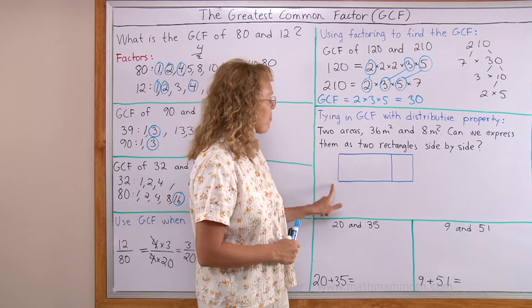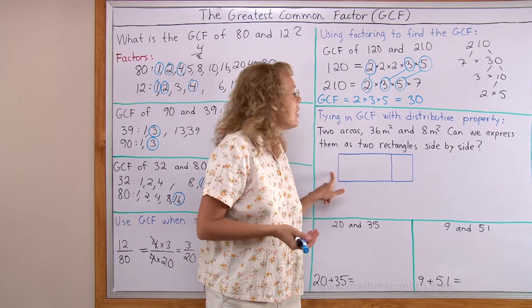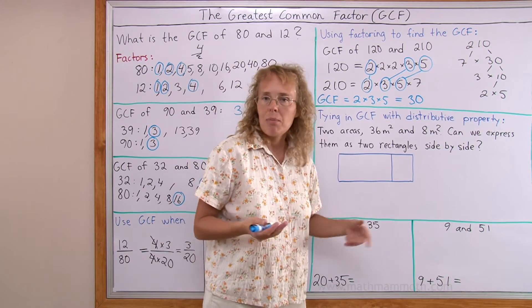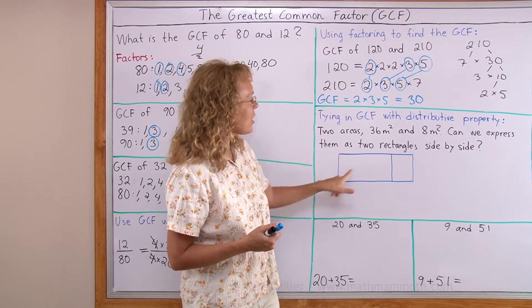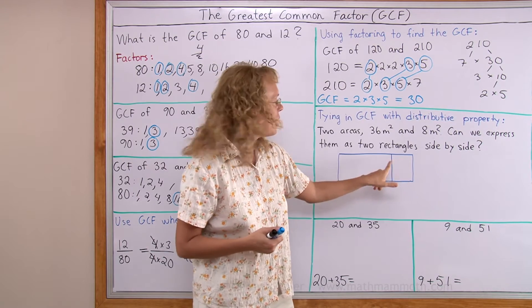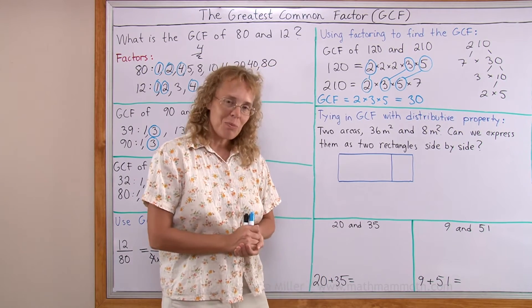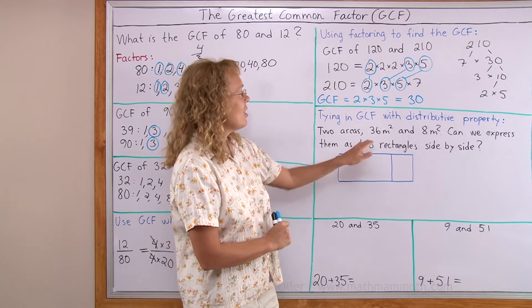This bigger one will be, this big rectangle, you know, you could say it's gonna be 2 times 18 square meters, or it could be 6 times 6. It could be something times something that makes 36. But whatever number you put here, it has to work for the 8 square meters too. Something times something makes 8. So, what we're gonna use, we're gonna use the greatest common factor of 36 and 8.